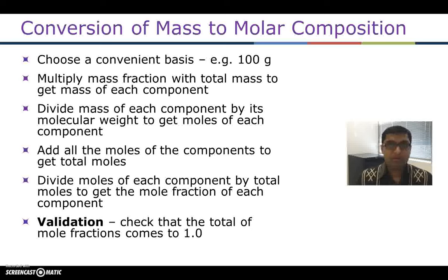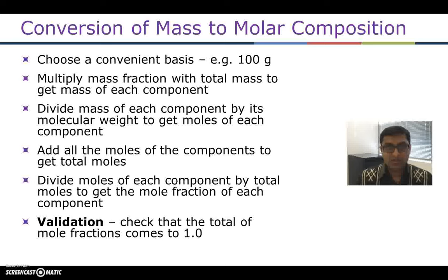Then you divide each of those component masses by their molecular weight to give you the moles of each component. Once you have the moles of each component, you add them up to get the total moles in the system. Then you divide each component's moles by the total moles, and that gives you the mole fraction of each component. To validate your answer, you can add up all the mole fractions and make sure they add up to 1.